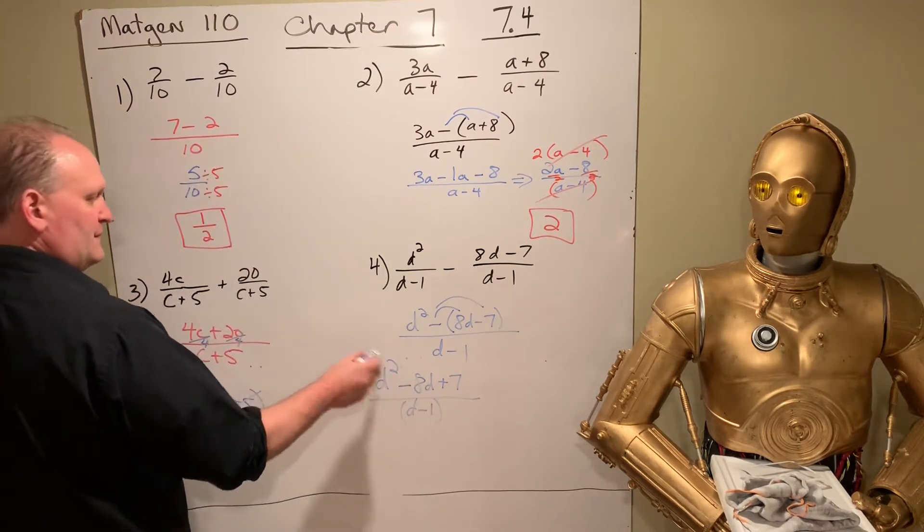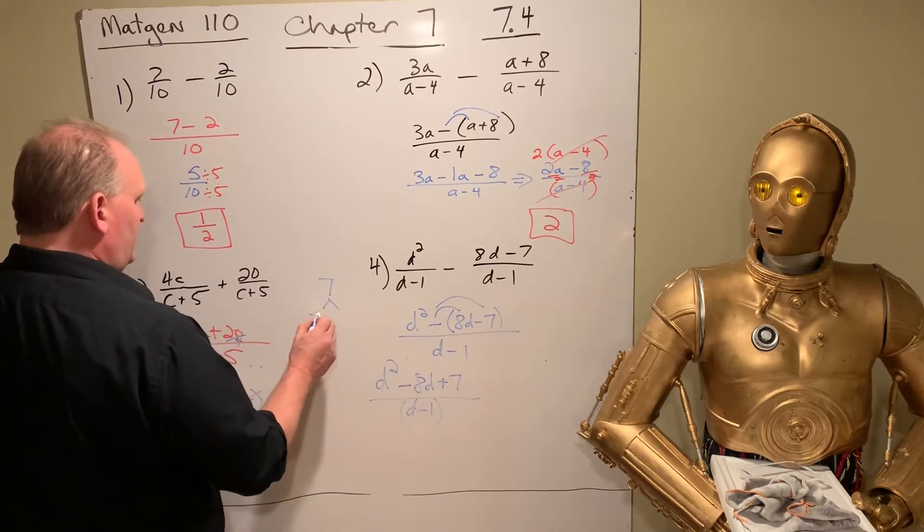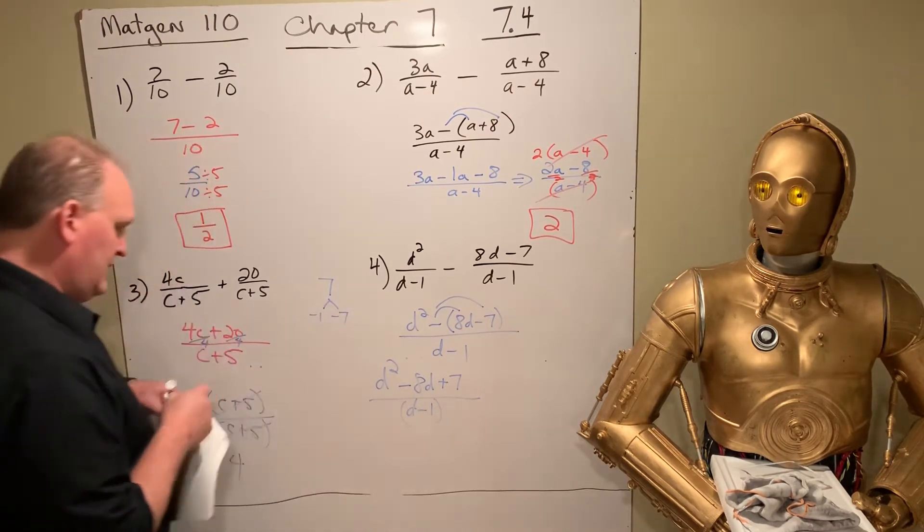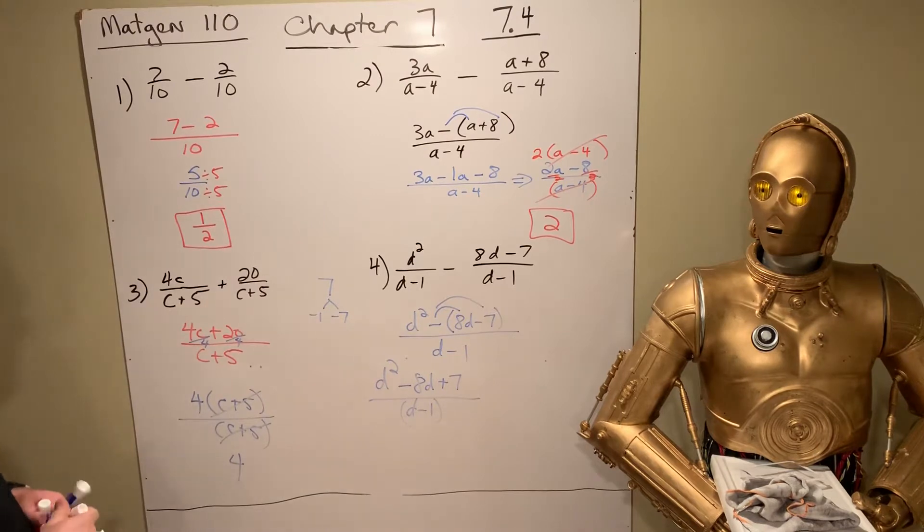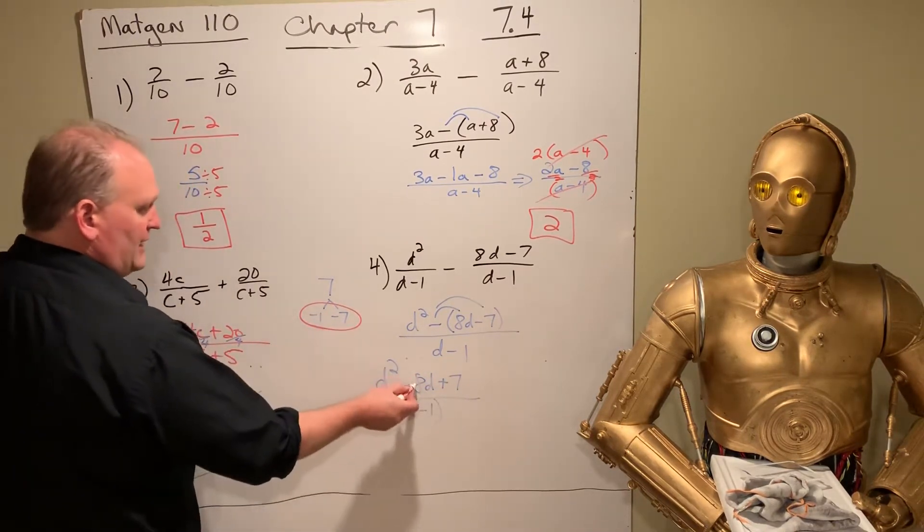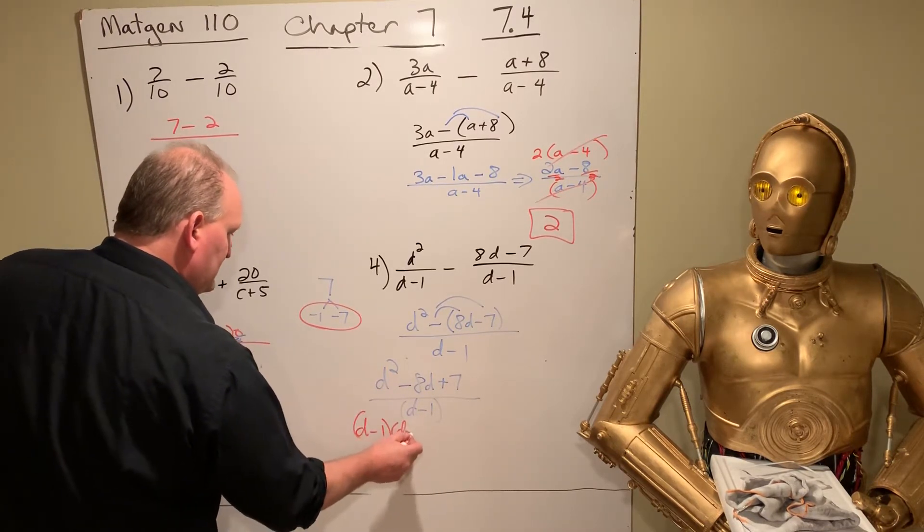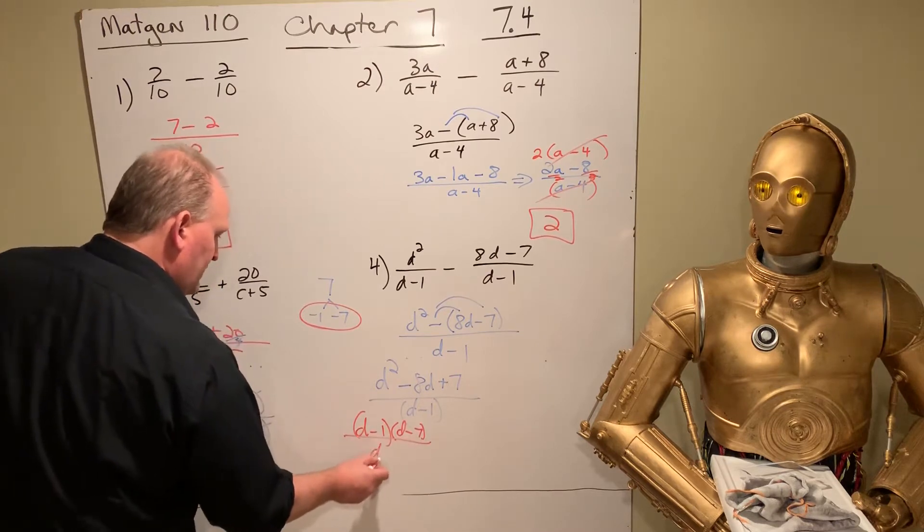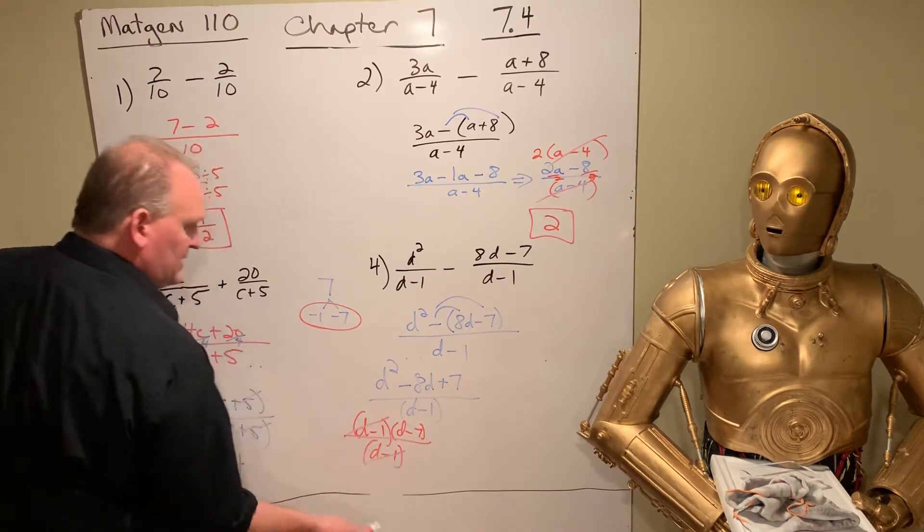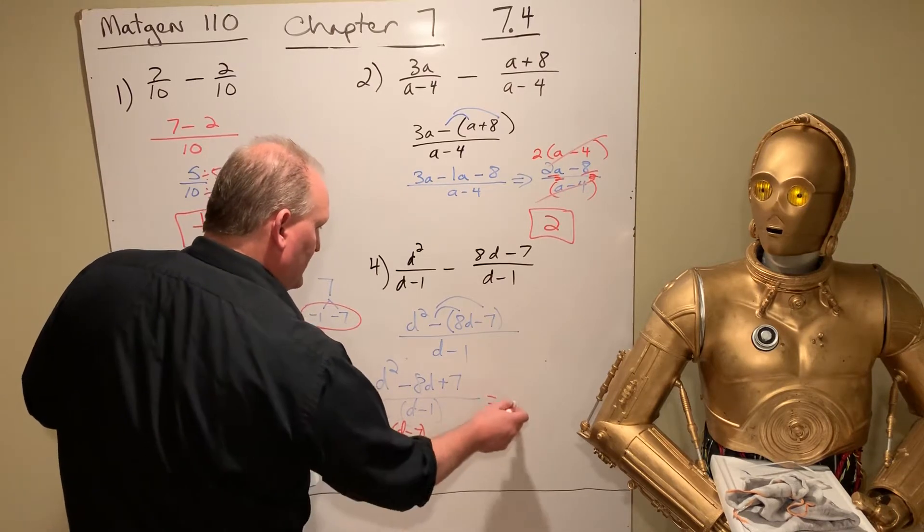Think of things that multiply to be 7 that add up to be a negative. It's got to be negative, negative. There's only one thing. And that's who did it. That multiplies to give you positive 7, but adds to give you negative 8. So we have D minus 1, D minus 7, over D minus 1. And the D minus 1s cancel. So we end up with just D minus 7.